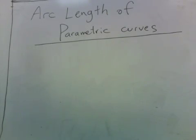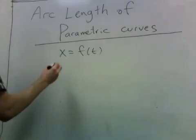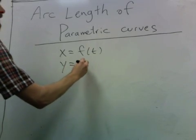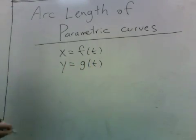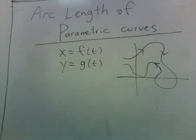All right, to find the arc length of a parametric curve, we do something similar to the case of functions. So let's say we start out with x as a function of t and y as a function of t. And here's our parametric curve.